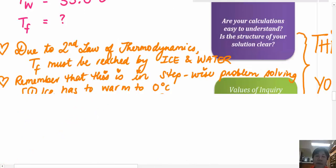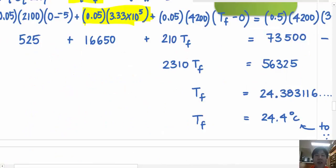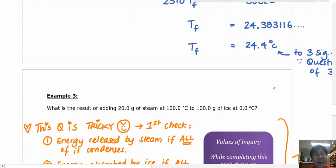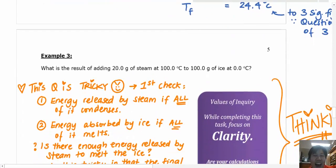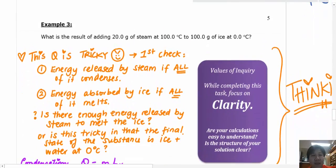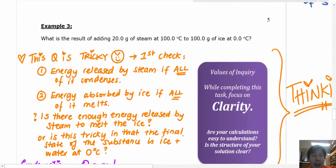Example three actually steps up a level. So if example two is what you call level 20 in gaming terms, then question example three is level 35. It's tricky, and I'm going to show you why, because you've got steam that's really hot at 100 degrees, but you've also got ice at zero degrees.